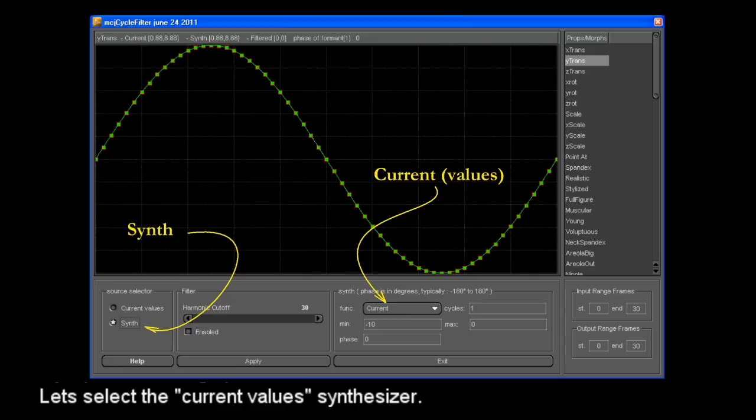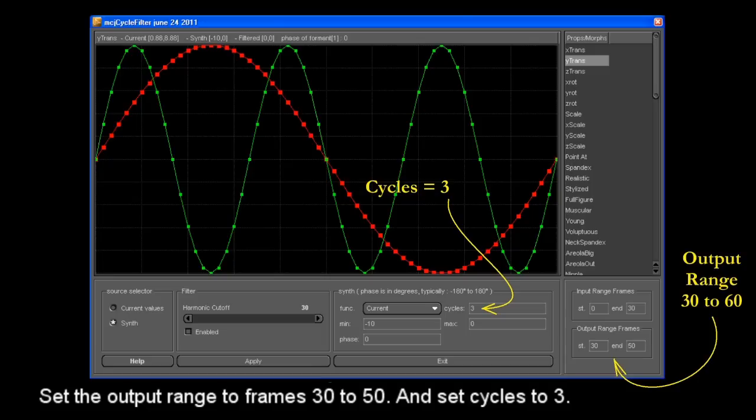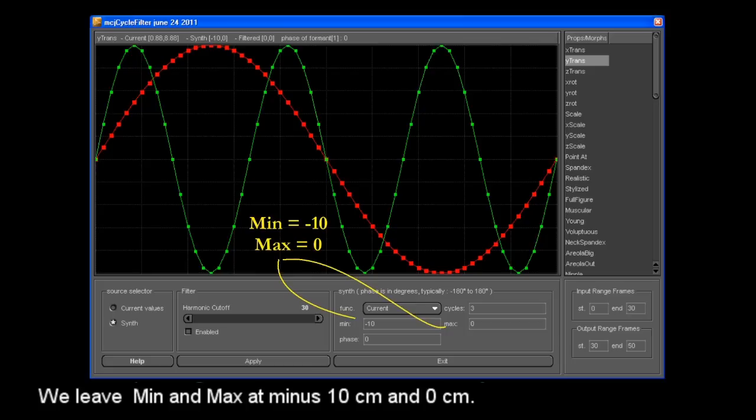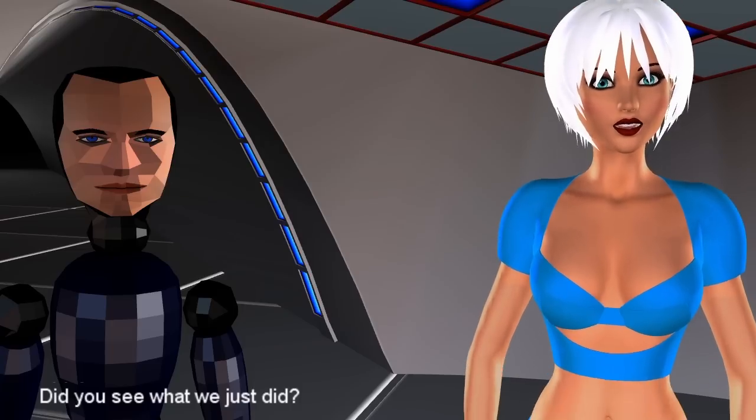Let's select the current value synthesizer and set the output range to frames 30 to 50 and set cycles to 3. We leave min and max at minus 10 cm and 0 cm. Apply. Did you see what we just did?